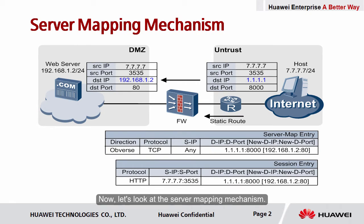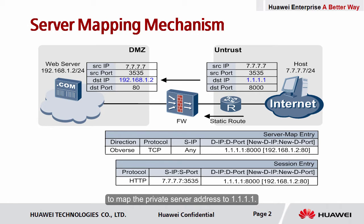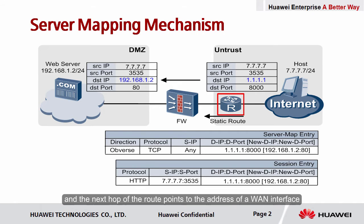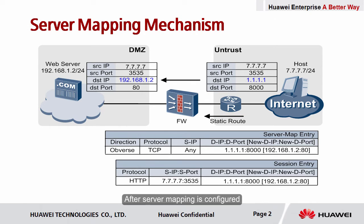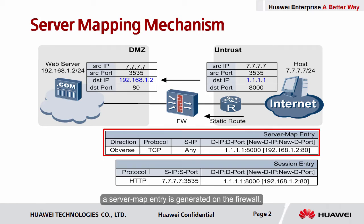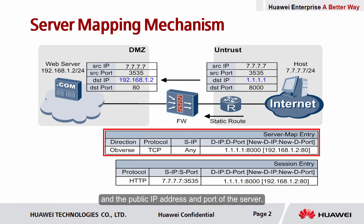Now let's look at the server mapping mechanism. After we configure server mapping on the firewall to map the private server address to 1.1.1.1, ensure that the upstream device of the firewall has a route to 1.1.1.1, and the next hop of the route points to the address of a WAN interface on the firewall. After server mapping is configured, a server map entry is generated on the firewall. This entry records the mapping between the private IP address and port, and the public IP address and port of the server.